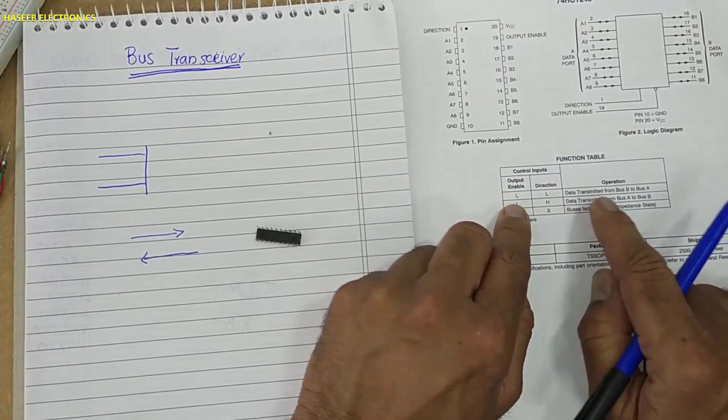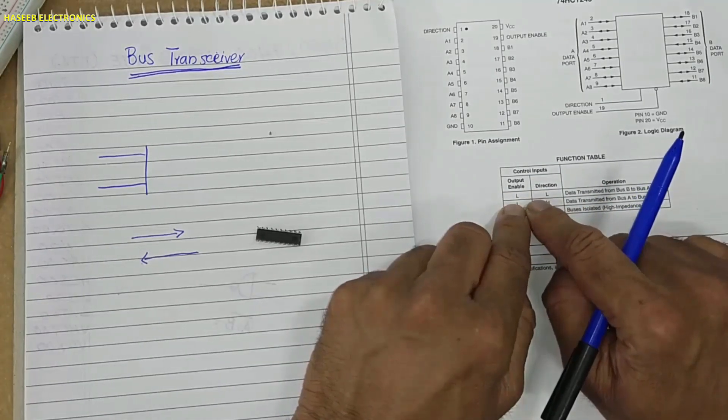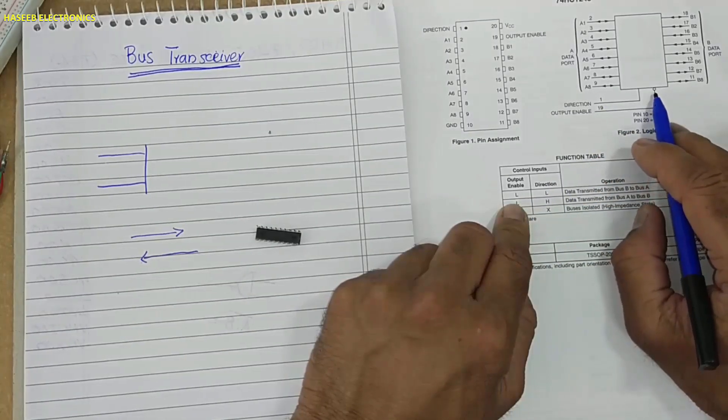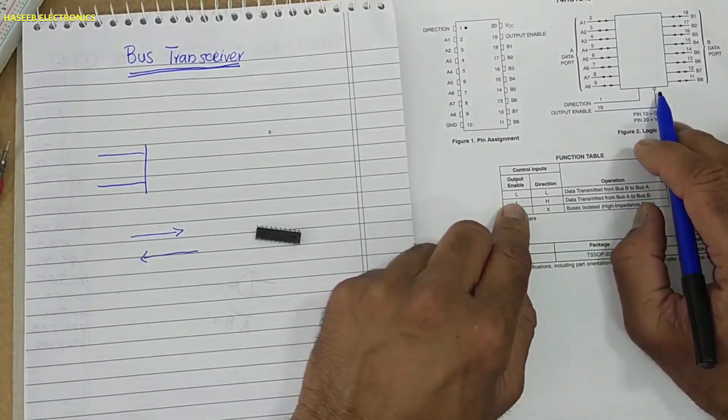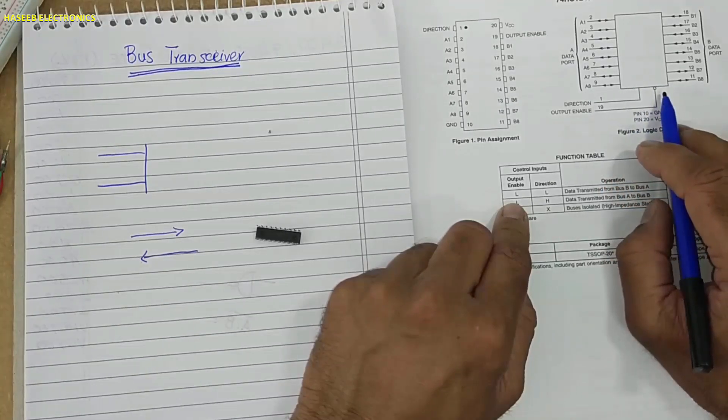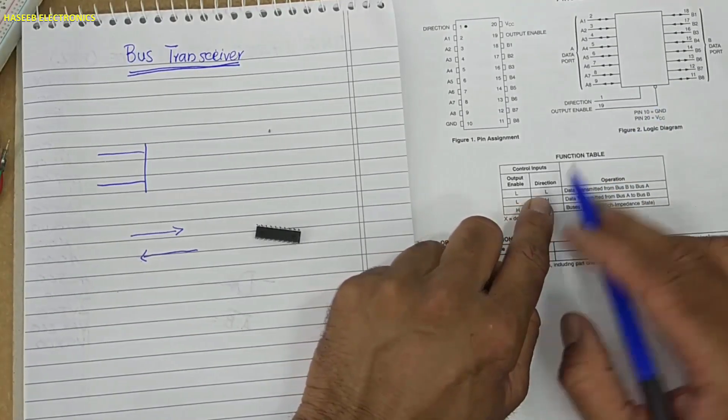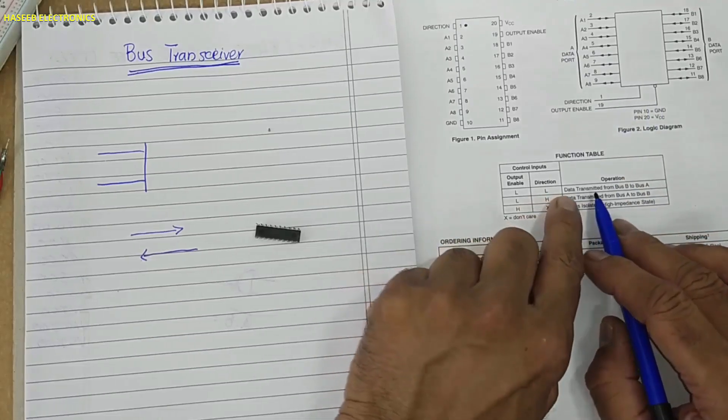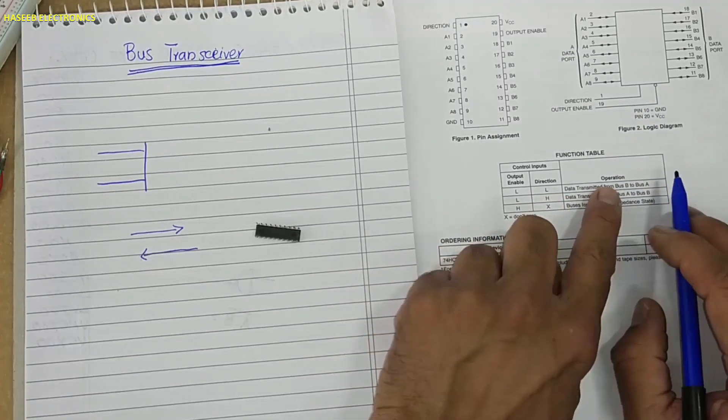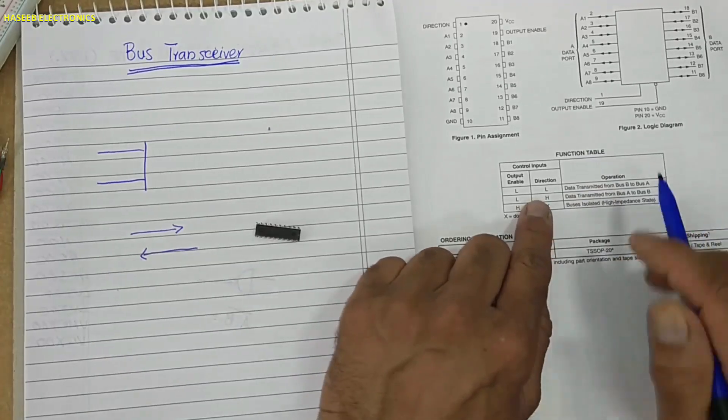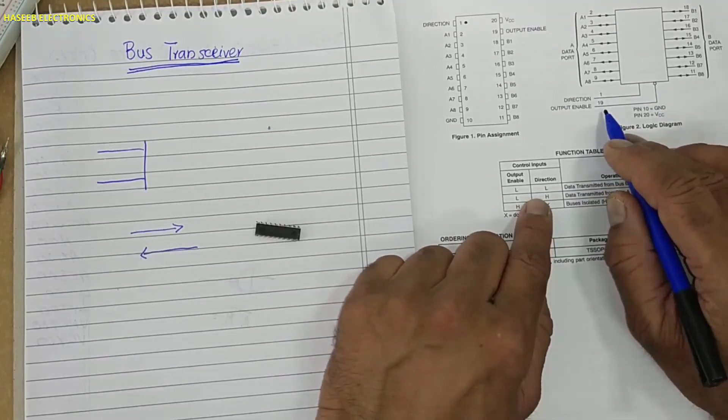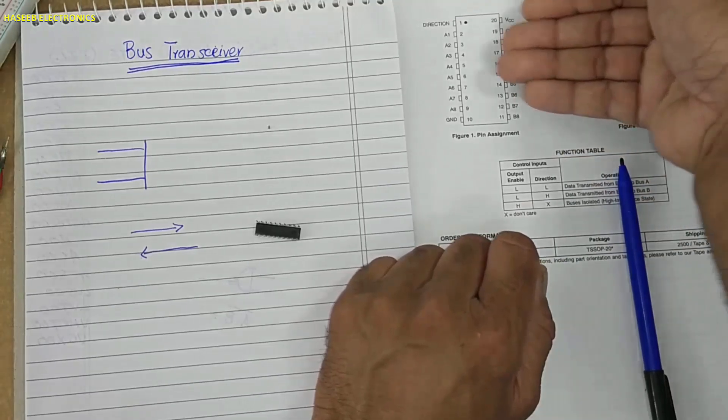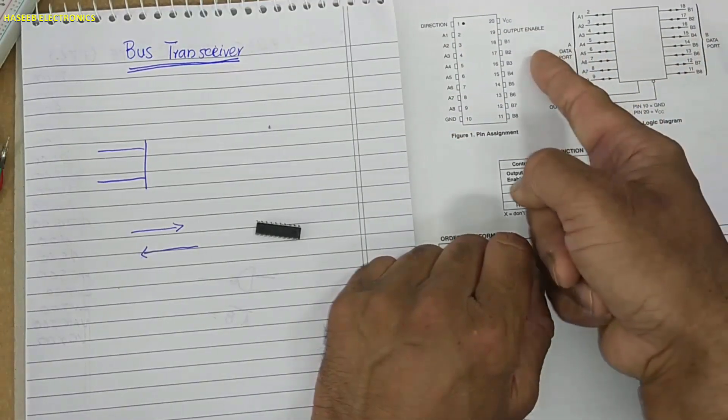This is truth table or function table. Output enable low - when this pin output enable is low, because here is inverter it must be active low, and direction is low, this pin is low, data transmitted from bus B to bus A. Pin 1, pin 19 low, data will be transmitted from B to A, from this side to this side.